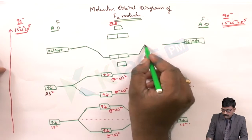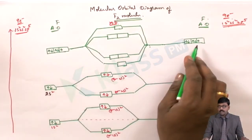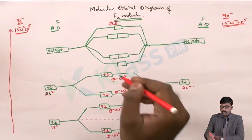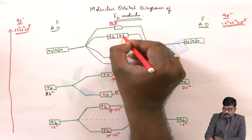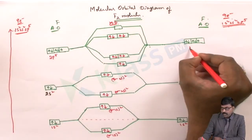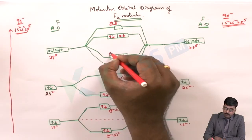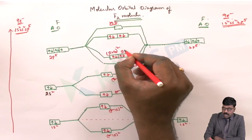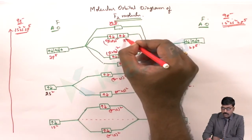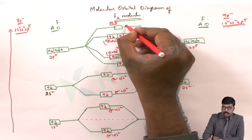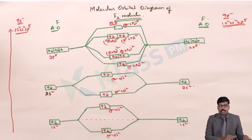Filling the molecular orbitals from the 2p level: sigma 2pz2, pi 2px2, pi 2py2, pi star 2px2, pi star 2py2, and sigma star 2pz0. All molecular orbitals up through pi star 2py are completely filled, and sigma star 2pz remains empty.